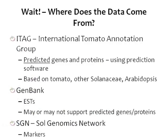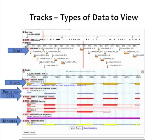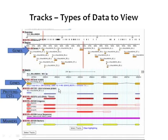Looking at what kinds of data we can actually see: at the medium scale, we would be looking at genes, and that's also true at the smaller scale. These genes are based on predictions that could come from Arabidopsis or potato — something you can select. We can also look at proteins, labeled under CDS, which stands for coding sequence. We can also see ESTs, which David discussed in depth, and we may also want to look at our markers.